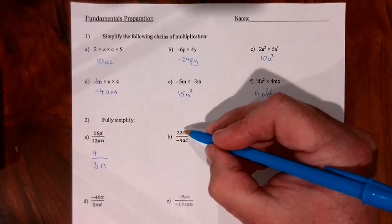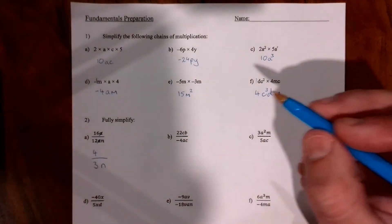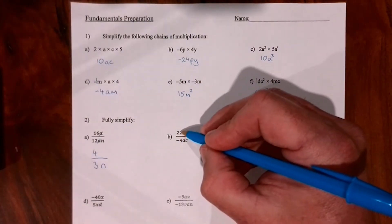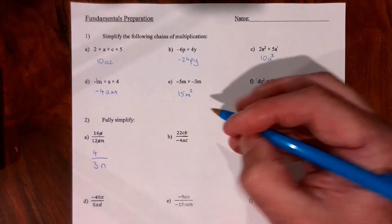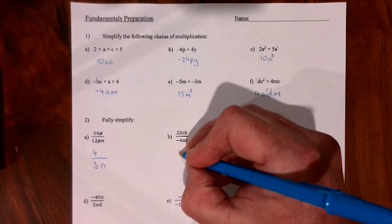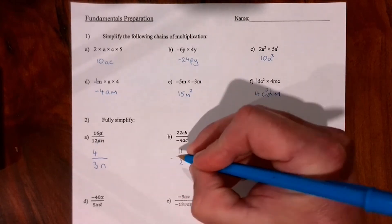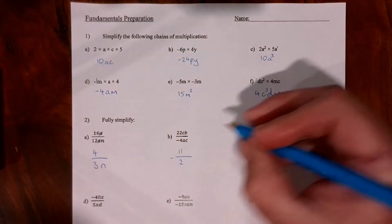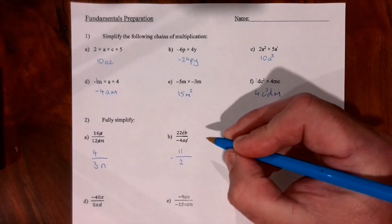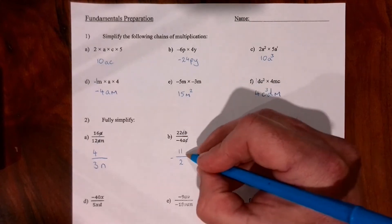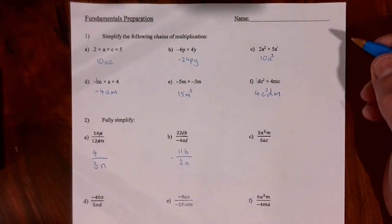Question 2b: I look at the numbers first, finding a common factor that goes into both 22 and 4 — which is 2 — giving negative 11 over 2. The c's can cancel one another out like in question 2a, and the b and the a remain, so that's the answer.